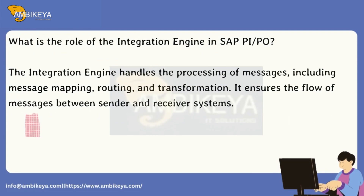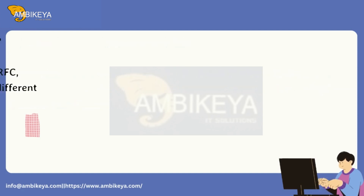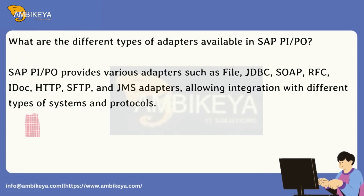What is the role of the Integration Engine in SAP PI/PO? The Integration Engine handles the processing of messages, including message mapping, routing, and transformation. It ensures the flow of messages between sender and receiver systems. What is a business process in SAP PI/PO? A business process represents a set of related activities or tasks that form a complete end-to-end business process; it can involve multiple systems and applications. What are the different types of adapters available in SAP PI/PO? SAP PI/PO provides various adapters such as file, JDBC, SOAP, RFC, IDOC, HTTP, SFTP, and JMS adapters, allowing integration with different types of systems and protocols.